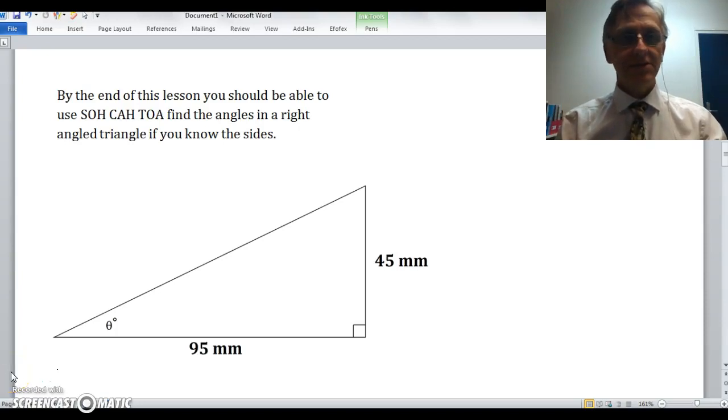Hi guys, in this video we'll be looking at the reverse of what we did in the last lesson. In the last lesson we used trigonometry and SOHCAHTOA to find missing sides, but this time we'll be using it to find a missing angle.